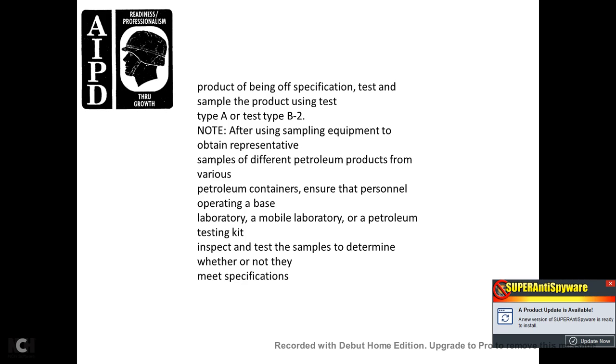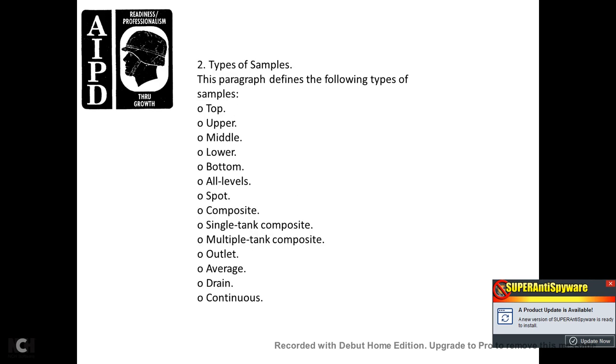Product testing uses Type A and Type B testing. Note that sampling equipment is used to obtain samples representing different petroleum products from various petroleum containers. Ensure that the personnel use operating base laboratory, mobile laboratory, or petroleum testing kit for inspection, testing, and sampling to determine whether or not products meet specifications.